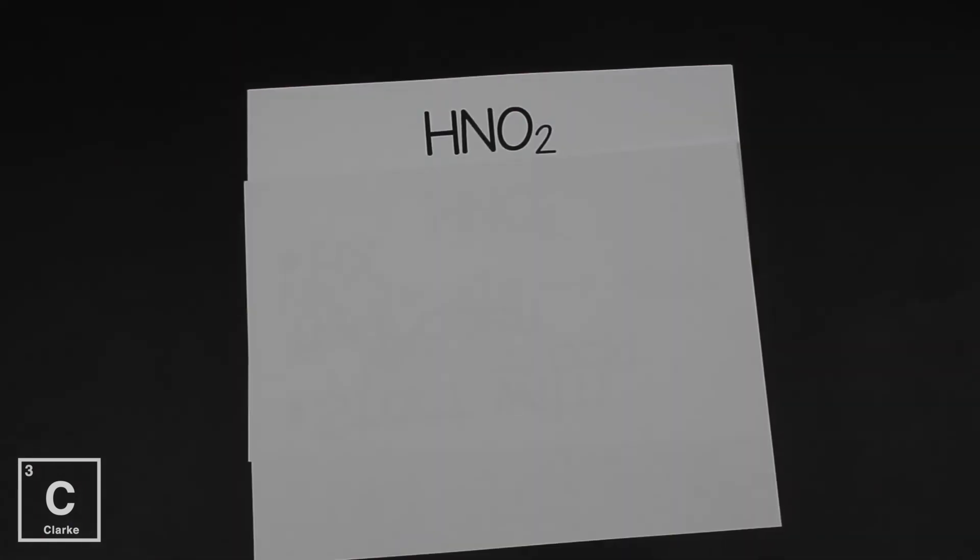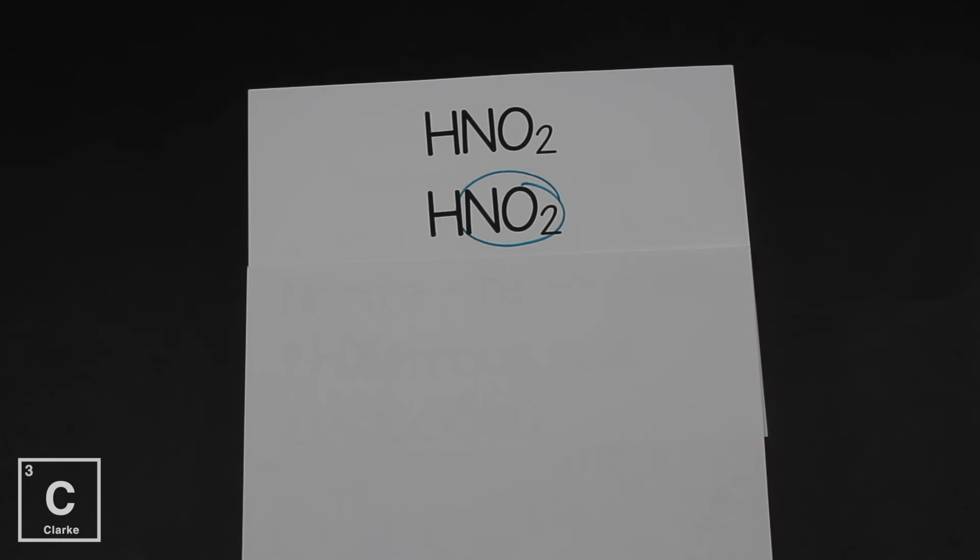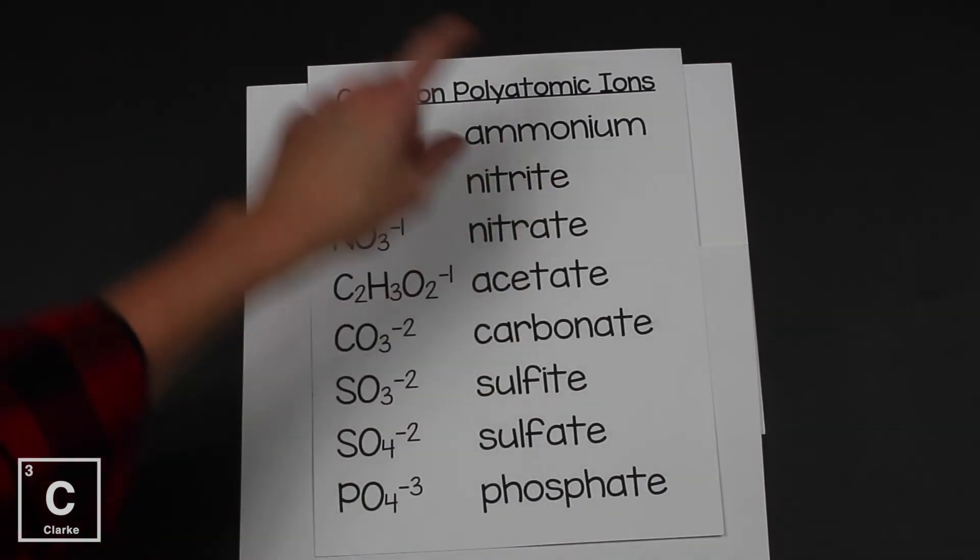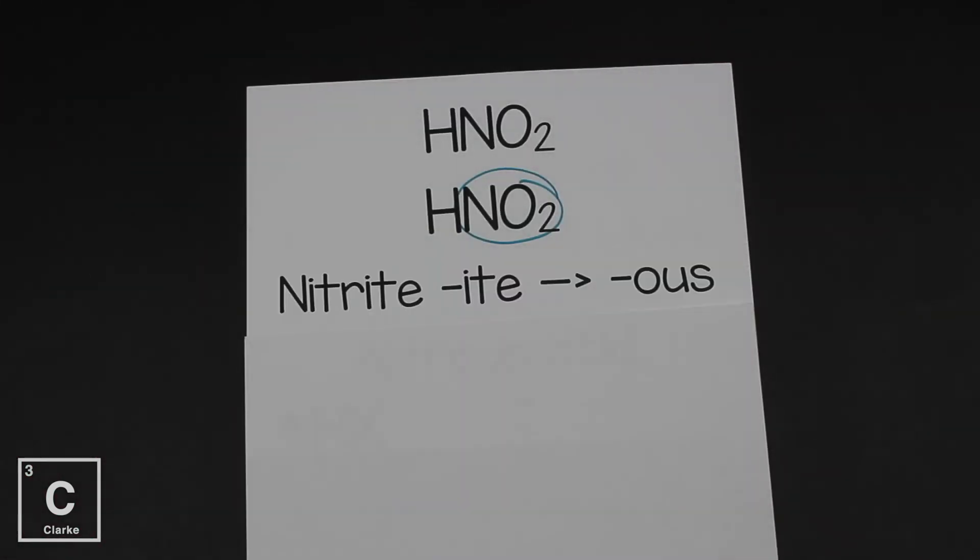Let's try another one. HNO2. Again, we can see that this acid has an oxygen and that oxygen is part of a polyatomic ion. We can identify the polyatomic ion because there's multiple elements working together as a unit. HNO2. We need to identify that polyatomic ion before we can go any farther. HNO2, that's nitrite. I-T-E. Nitrite ends in I-T-E. That means we're going to change the ending to O-U-S. This is nitrous acid.